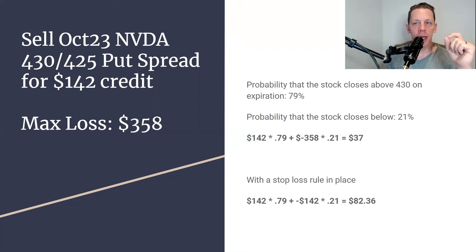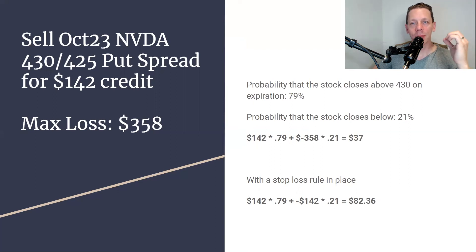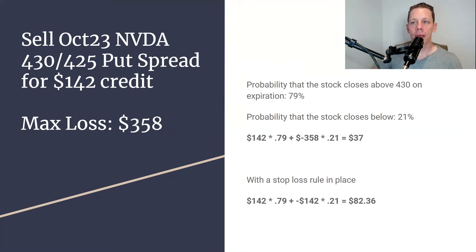If we stop this trade out whenever it's a loser at a 1x loss — a loss equal to the credit that we took in — in this case that would mean stopping it out at a cost of $244. Then on each loss we would save $114, and the expected value of the trade after many repetitions would be raised to $82. After many repetitions of this trade, you would expect to see an average gain of $82.